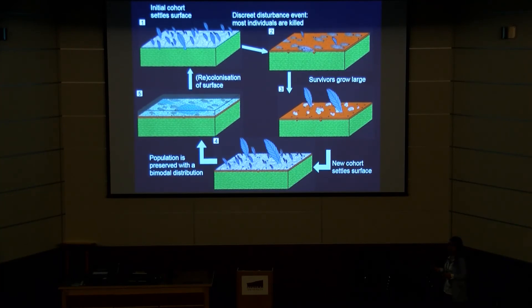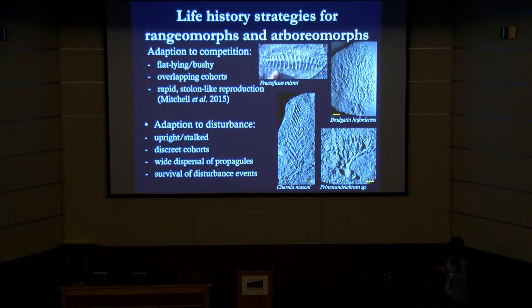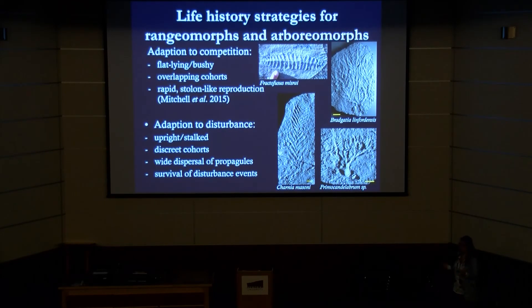The fact that we can see this in three taxa, where the largest individuals are all of a similar size, gives us greater confidence that this is a real signal. Piecing this all together, we can get an idea of life history strategies for different rangomorphs. Generally, the flatter-lying, bushier ones with displayed morphology seem better adapted to competition, or at least they didn't like disturbance very much.